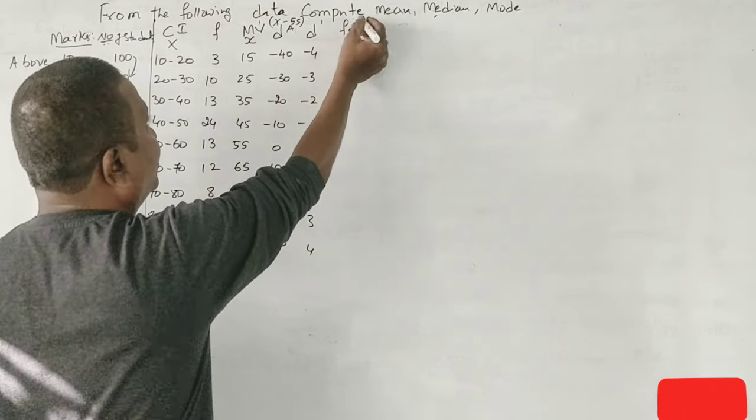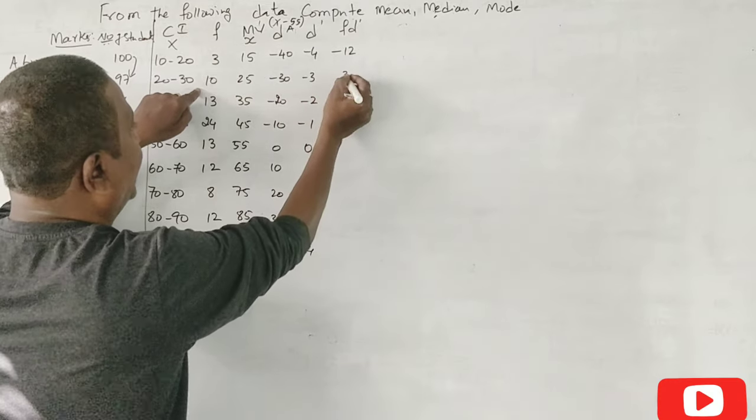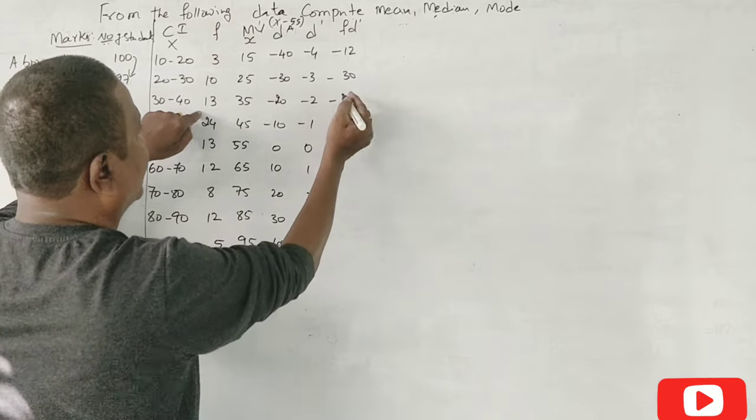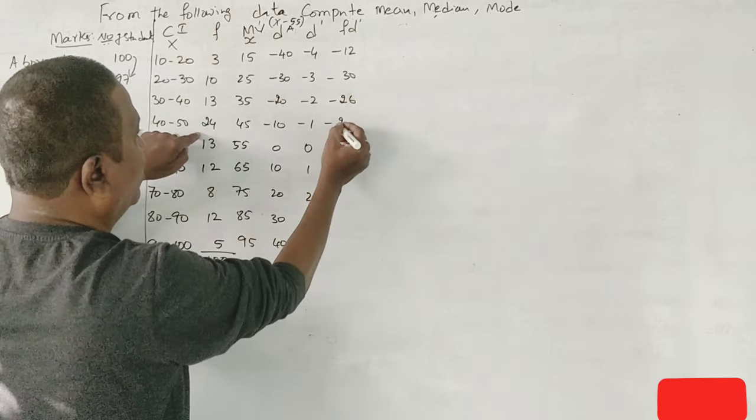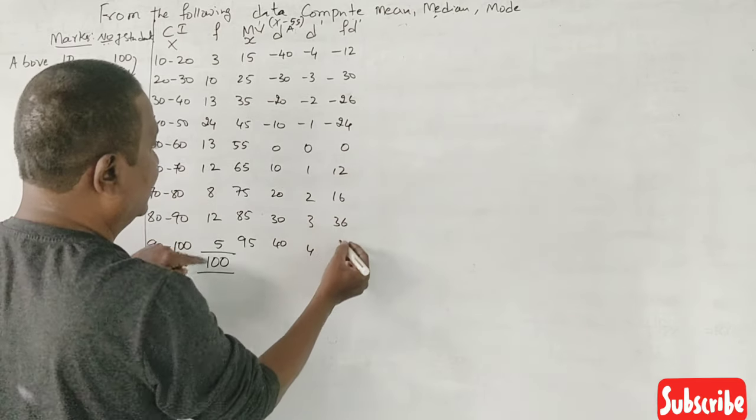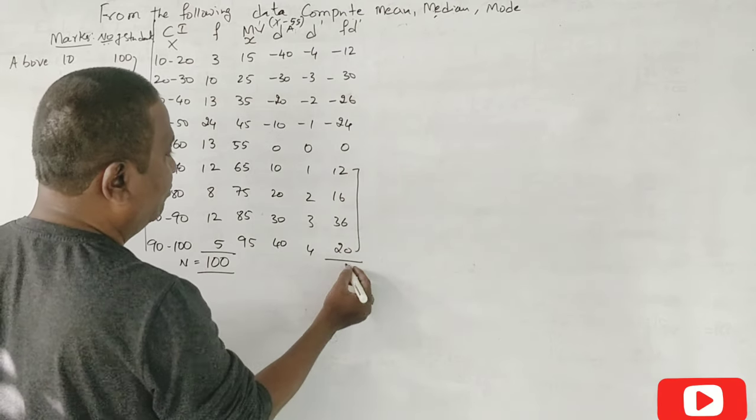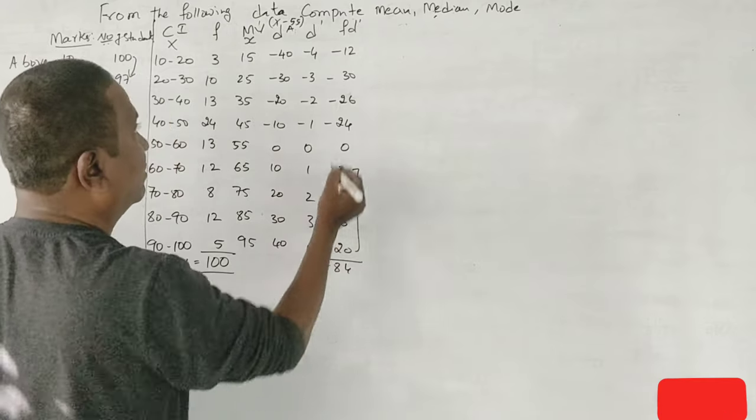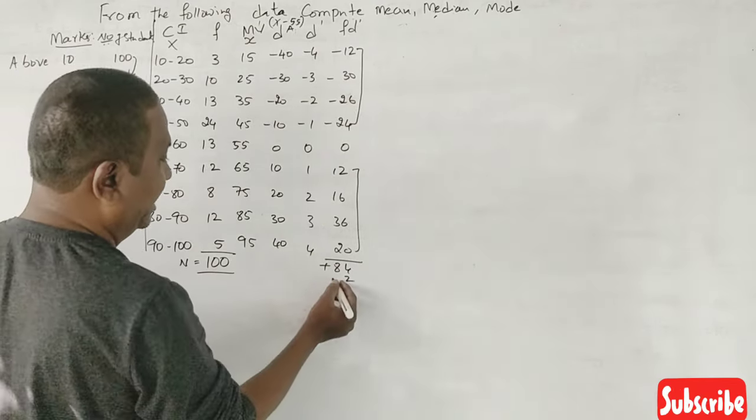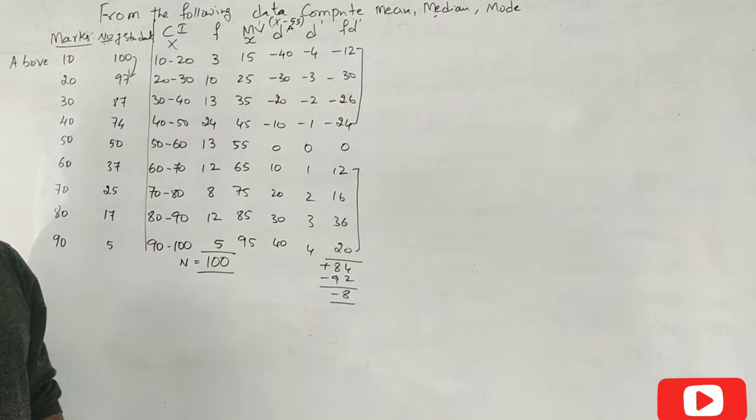F and D dash. F into D dash. 3, 4's are 12, minus 12. 10, 3's are 30, minus 30. 13, 2's are 26, minus 26. 24 on the 24, 0, 12, 16, 36, 20. Correct? Even the plus and the add model. 12, 14, 16, 78. Even the add model. 10, 12, 15, 8, 9. Yes to what? Minus 8. Correct?